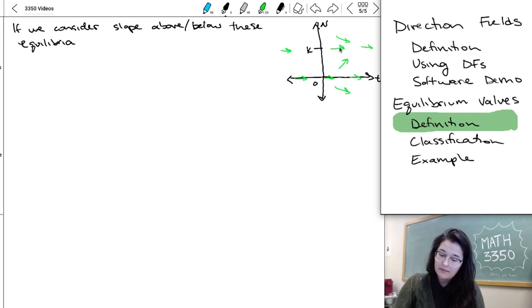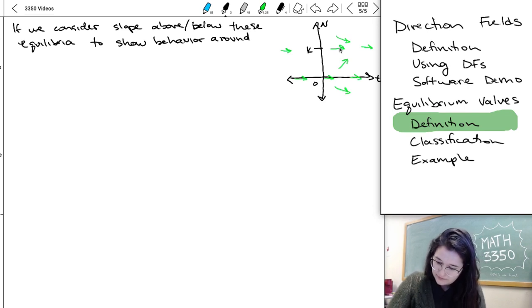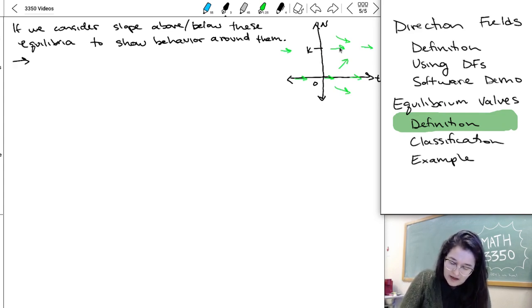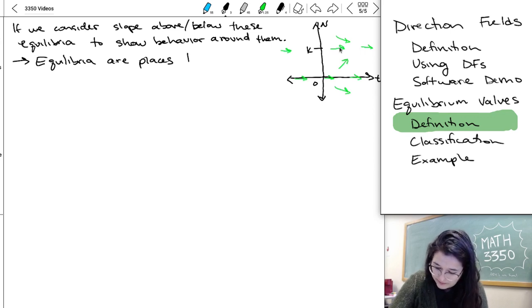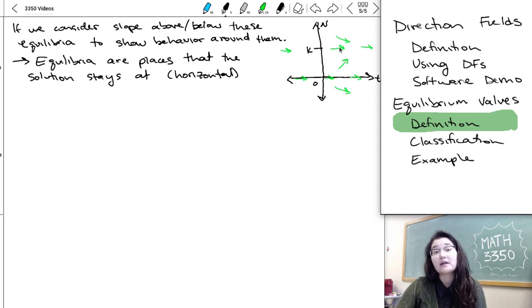And the big takeaway from that would be that the direction field would tell us how things behave around the equilibria. And most importantly, equilibria are going to be places that the solution stays at. They're going to be horizontal values on the direction field.